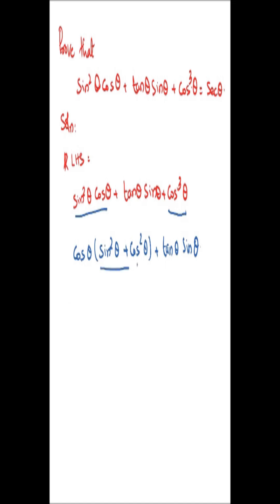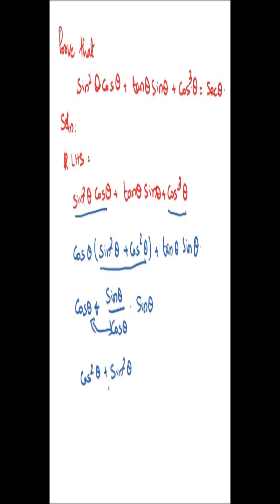We know that sine squared theta plus cosine squared theta is equal to 1. That is equal to cosine theta into 1, plus we can write tan theta as sine theta divided by cosine theta, into sine theta. This gives cosine squared theta plus sine squared theta, divided by cosine theta. Since cosine squared theta plus sine squared theta equals 1, this becomes 1 over cosine theta, which equals secant theta.